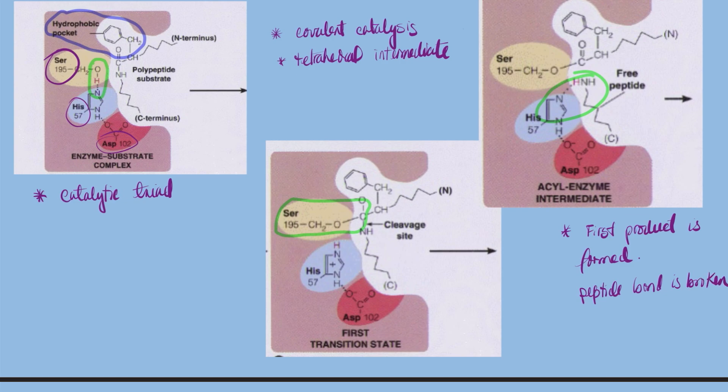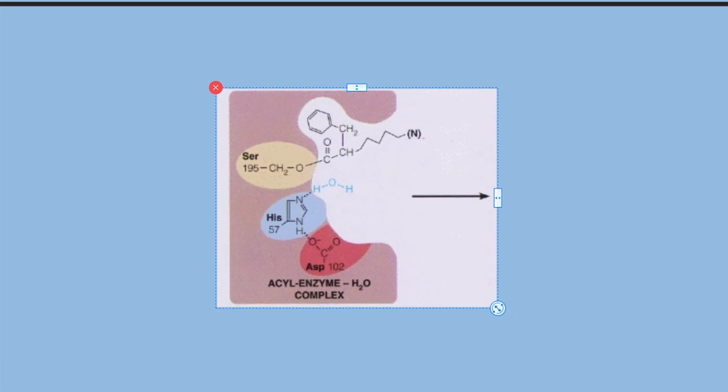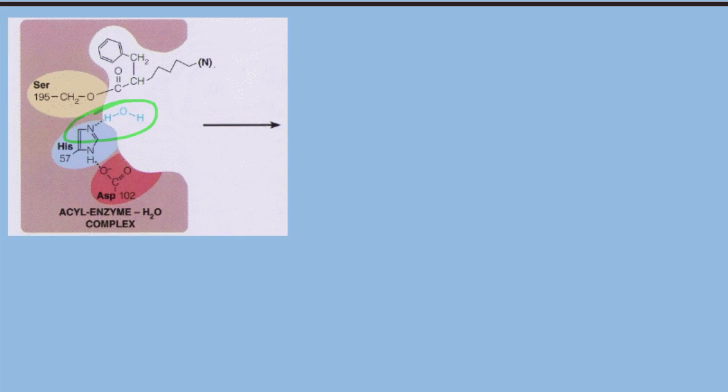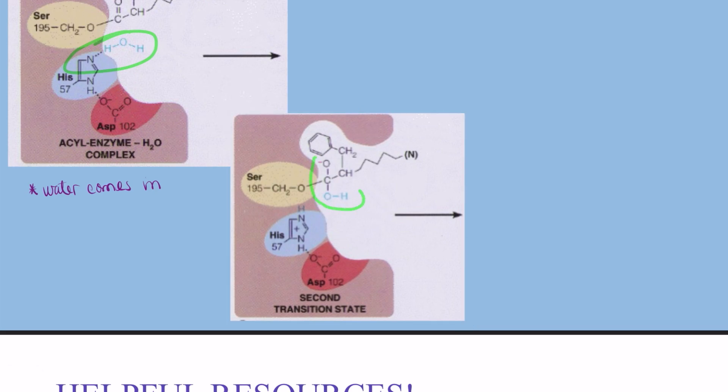During step number four, water comes in and is positioned. Next, histidine-57 is deprotonated by water, and the remaining hydroxide ion attacks the carbonyl group, forming a tetrahedral intermediate, which will collapse into a carboxylate anion, and serine-195 will be displaced.